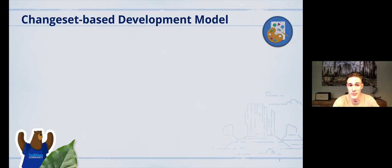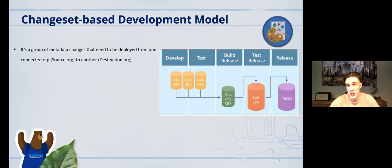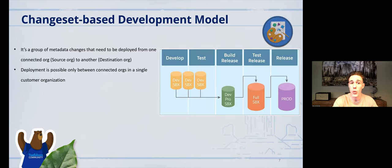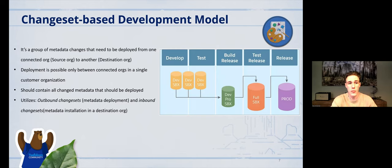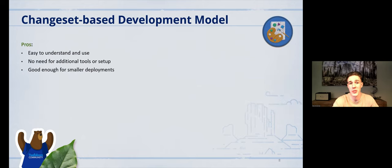Change set-based development: a change set is basically a group of metadata changes that need to be deployed from one connected org to another connected org. You can only deploy change sets between connected organizations. It should contain all the changed metadata that needs to be deployed — otherwise the deployment may fail or your functionality may not work properly. It utilizes outbound and inbound change sets. The pros: it's a straightforward process, easy to understand and use, requires no additional tools or setup, and is good enough for smaller deployments.